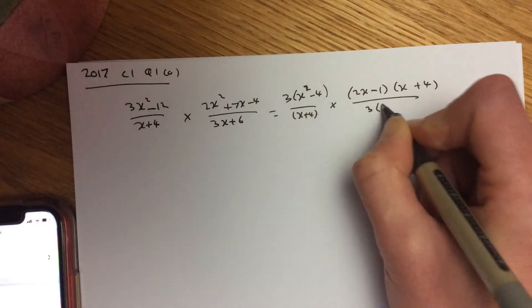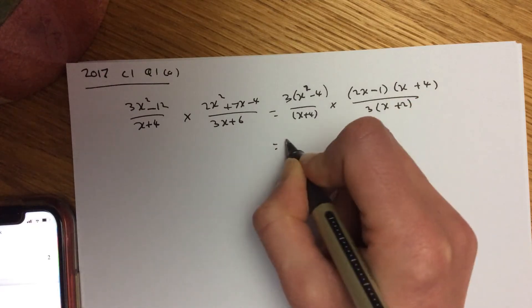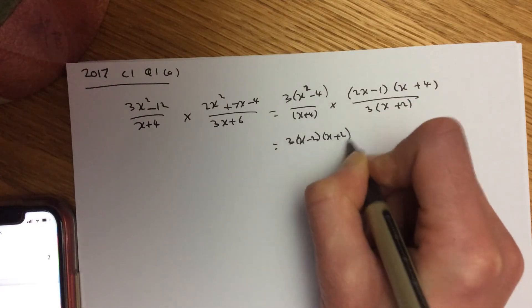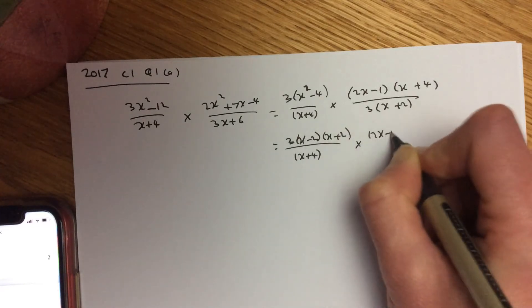Pull out of this, the 3. Notice the difference of two squares there, so it's 3x minus 2, x plus 2, over x plus 4 times 2x minus 1.